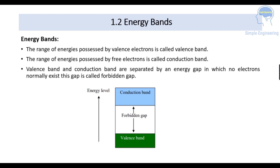The range of energies possessed by the valence electrons is called the valence band, and the range of energies possessed by the free electrons is called the conduction band. Valence band and conduction band are separated by an energy gap in which no electrons exist — this is called the forbidden energy gap. Energy increases from the valence band up to the conduction band, and the range of energy levels is higher in the conduction band.